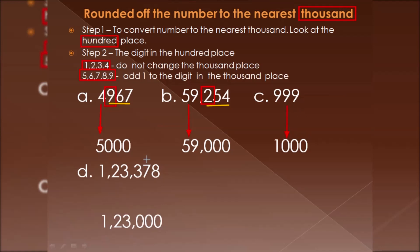Next is 123378. The thousands place is 3 and the hundreds place is 3. Since 3 is less than 5, we do not change the thousands place — it remains as it is, and all digits after the thousands place become zero. The digits before the thousands place remain as they are. So the rounded number of 123378 is 123000. Thank you.